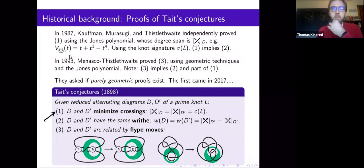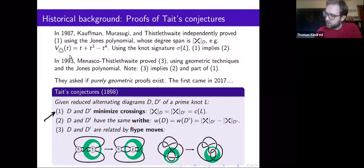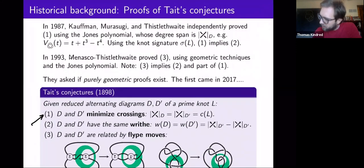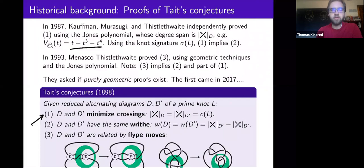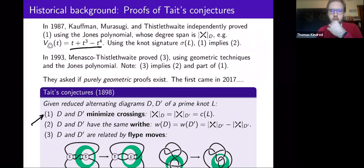This is true for any diagram. But if you have a reduced alternating diagram, then the degree span equals the number of crossings. So in the case of the trefoil, the degree span of the Jones polynomial is three. Therefore, there can be no diagrams with fewer than three crossings, but the alternating diagram has three crossings — therefore it's minimal. This argument holds in general for any reduced alternating diagram.